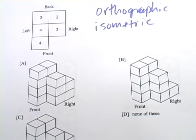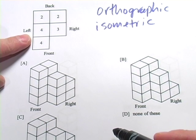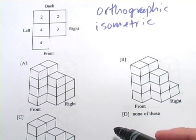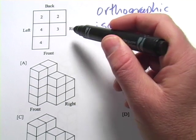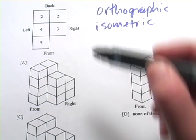The trick with these problems is to decide which of these isometric representations matches with this orthographic. And the trick here is just to keep track of where the front, the right, the left, and the back are, and then to know that these numbers represent the number of blocks.